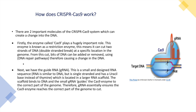So how does CRISPR-Cas9 actually work? There are two important molecules of the CRISPR-Cas9 system. Firstly, the enzyme called Cas9 plays a hugely important role. This enzyme is known as a restriction enzyme, meaning it can cut two strands of DNA at the same time, which is known as a double-stranded break.